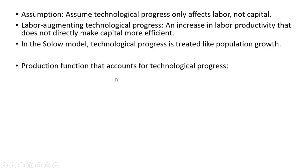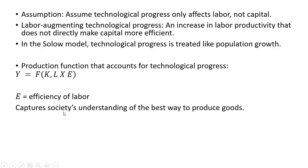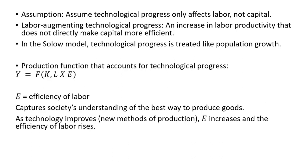Let's show how the production function accounts for technological progress. Our production function: Y is output, it's a function of capital and labor, where labor is being multiplied by E. E represents the efficiency of labor — it captures society's understanding of the best ways to produce goods and services. As technology improves through new methods of production or organization, E increases and the efficiency of labor rises.